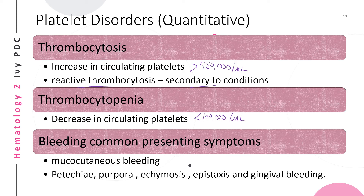Bleeding disorders resulting from platelet abnormalities, whether quantitative or qualitative, are usually manifested by bleeding into the skin or mucous membranes or both. Common presenting symptoms of mucocutaneous bleeding include petechiae, purpura, ecchymosis, epistaxis, and gingival bleeding.